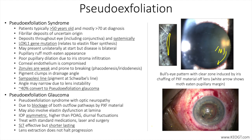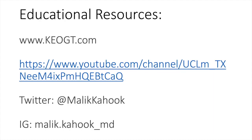In summary, pseudoexfoliation is a systemic disease with serious ocular manifestations related to the gradual deposition of fibrillary material on the lens and within the drainage angle, leading to elevated IOP and glaucoma in 40% of cases. Patients are over 50 years of age and disease manifestations are bilateral and often asymmetric. Treatment involves the traditional medication, laser, MIGS, and filtration surgery paradigm, with a caveat that IOP lowering from standalone cataract surgery and laser trabeculoplasty often exhibits shorter lasting efficacy due to the buildup of PXF deposits. Consider visiting educational resources including keogt.com.